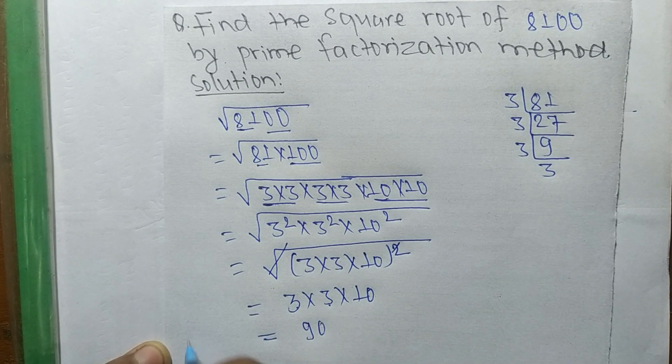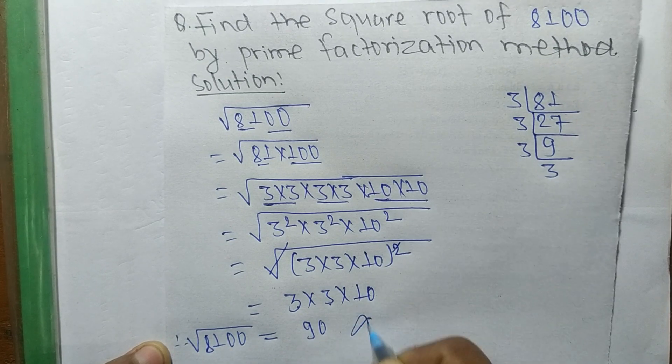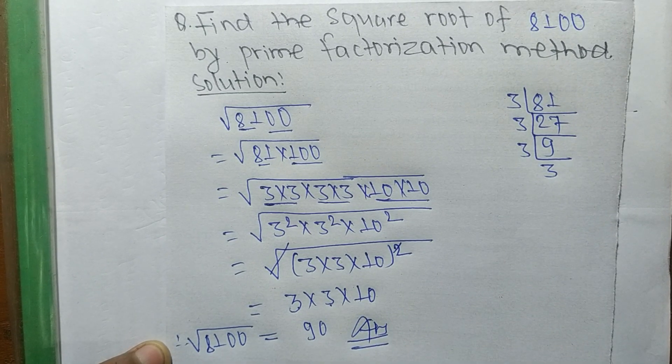So the square root of 8100 is equal to 90. This is the best method for today.